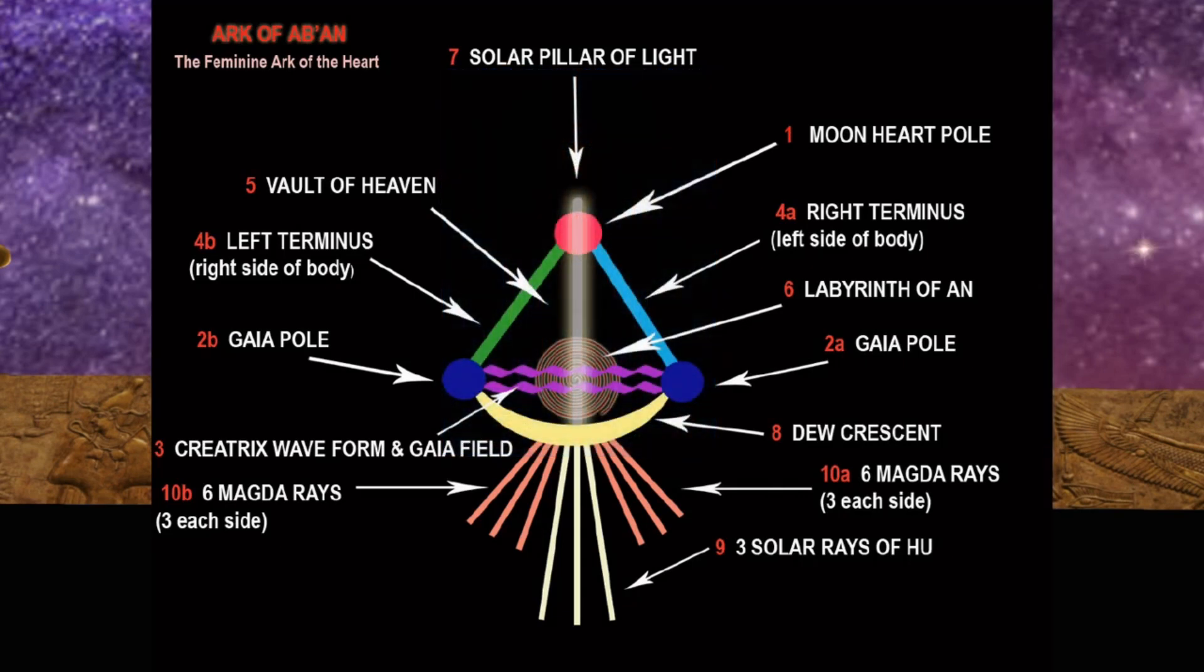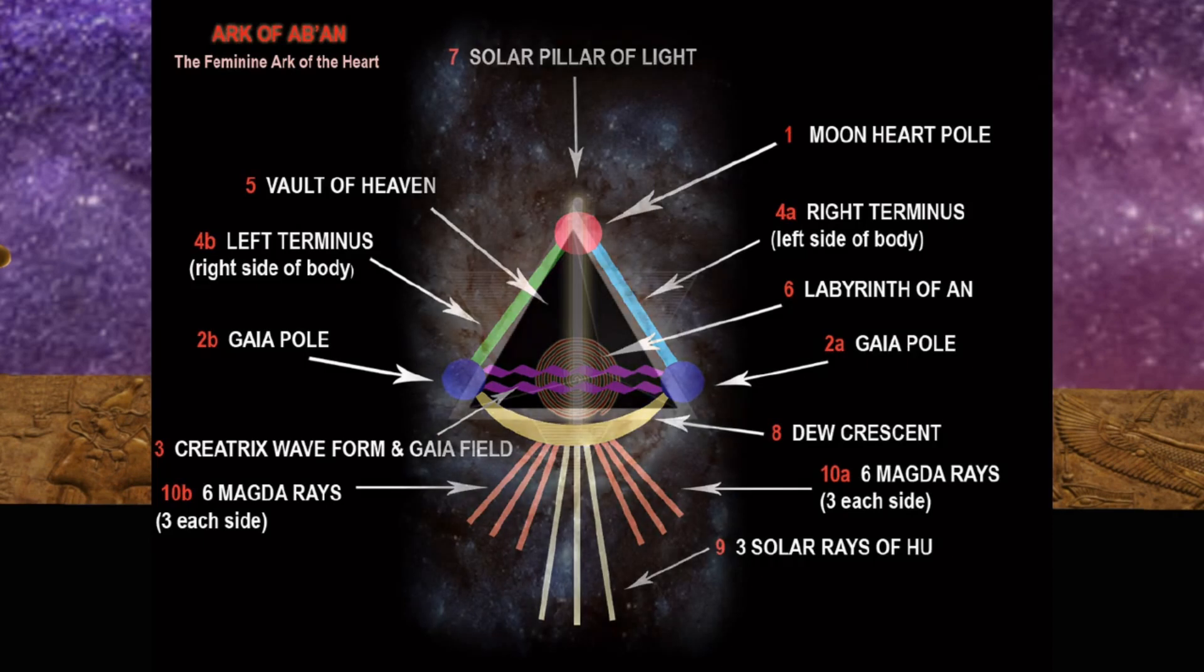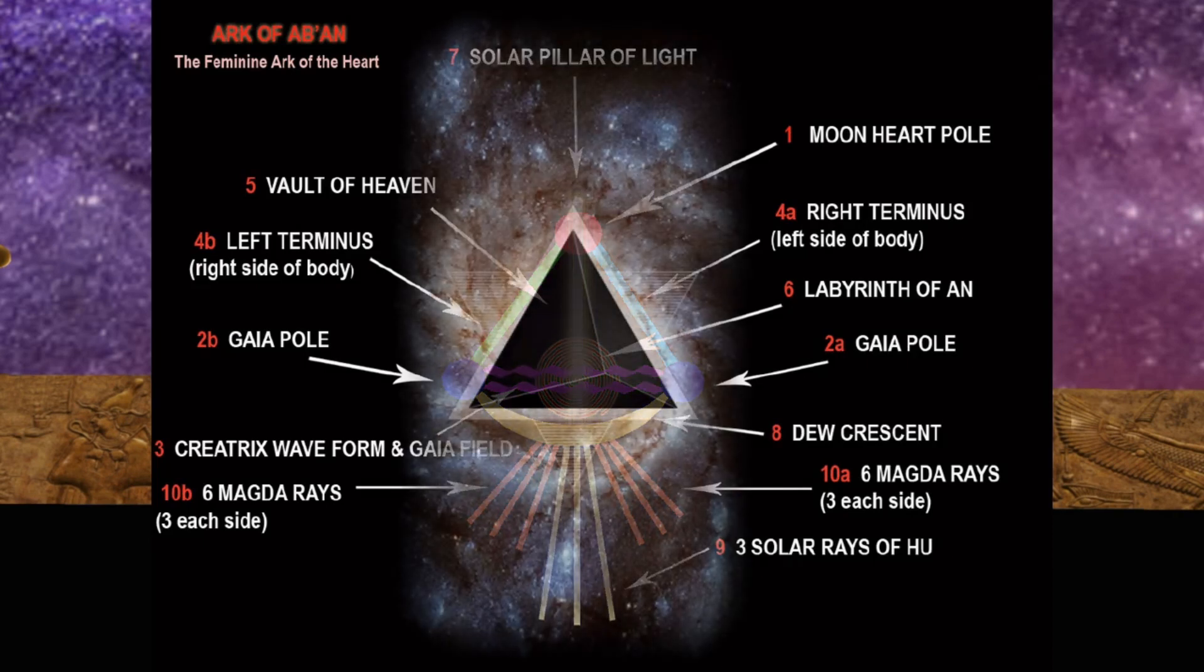The second nodes, A and B, the Gaia poles. These heart poles act as small pulsars, reversing polarity between each other to bring through the holographic waveform of the Gaia field.